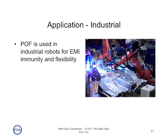Optical fiber is used in lots of industrial applications because, being optical fiber, it's immune to electromagnetic interference (EMI) and it's very flexible. So welding robots, like this one building a car here, use plastic fiber on the arms to allow them to carry digital signals in a very adverse electrical environment.